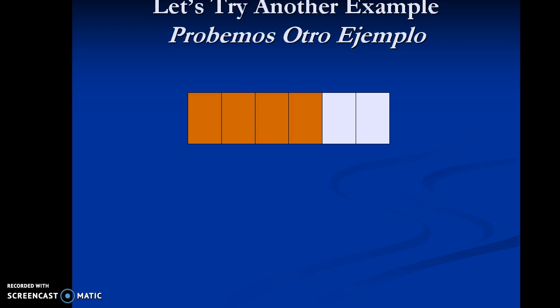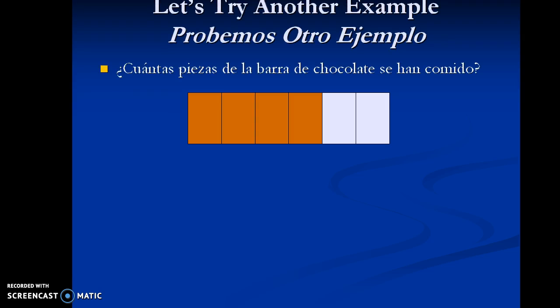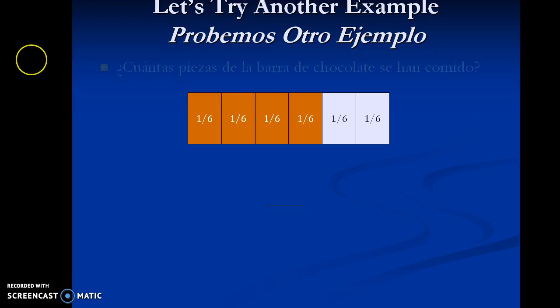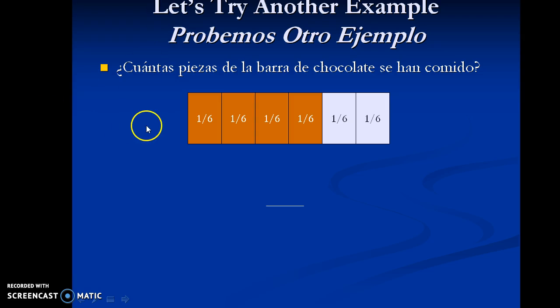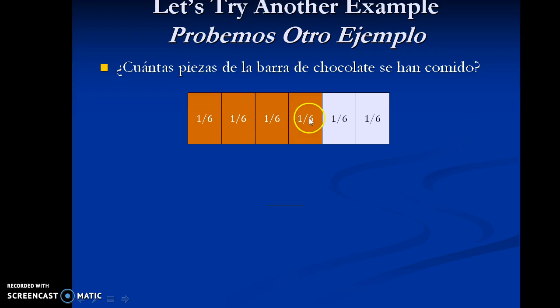So, let's try another example. How many pieces of the bar of chocolate have been eaten? Well, as we can see, there are six total pieces of chocolate here. One, two, three, four, five, six. Uno, dos, tres, cuatro, cinco, seis.